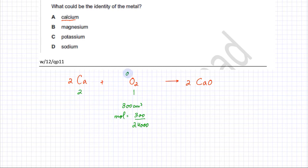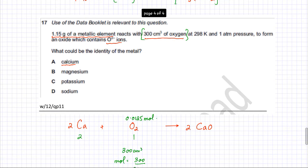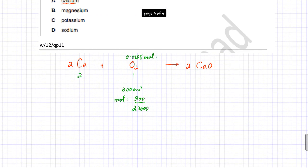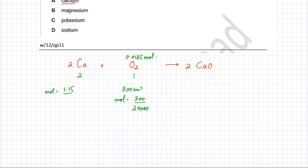That gives 0.0125 moles of oxygen gas. Now for the 1.15 grams of calcium: moles = mass ÷ molar mass = 1.15 ÷ 40, which gives 0.02875 moles of calcium.